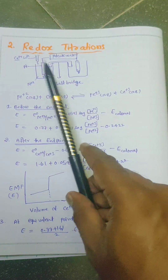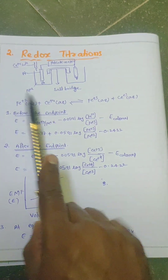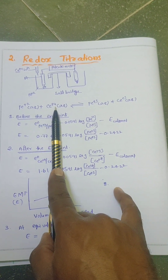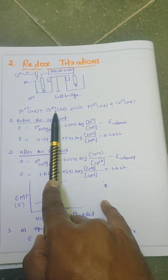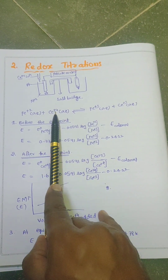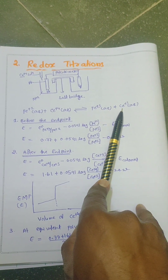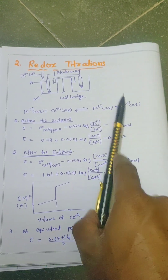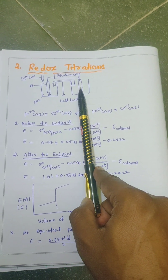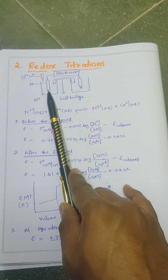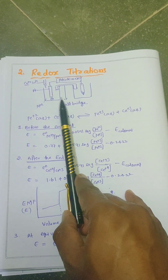Now we will discuss about redox titrations. Redox titrations are well explained by taking the redox reaction between ferrous ions and ceric ions. When ceric ions are added to ferrous ions, the ceric ion oxidizes ferrous ions to ferric ions and itself is reduced to cerous ions. Here, the calomel electrode is used as the standard electrode and it is connected to the platinum electrode, which is a neutral electrode. This platinum electrode is kept in the ferrous ion solution.